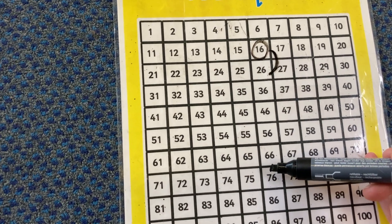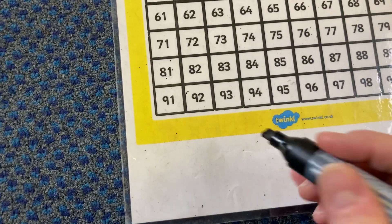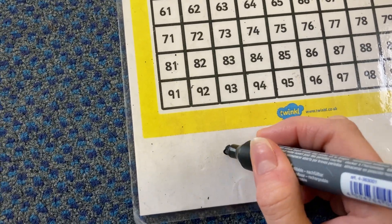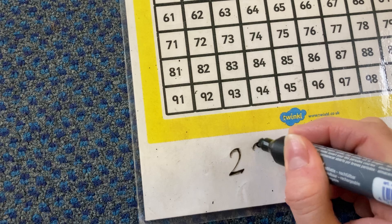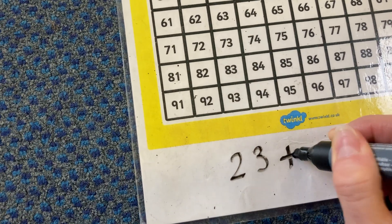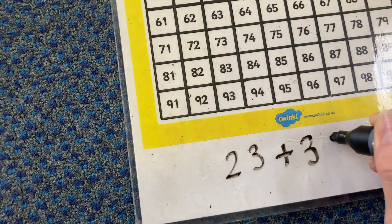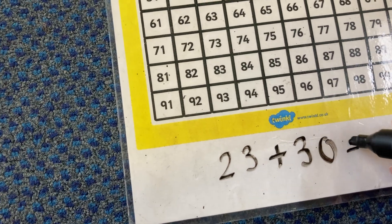So if you do a number sentence where you are adding a number, so for example, if I had 23 add 30, which is another tens.